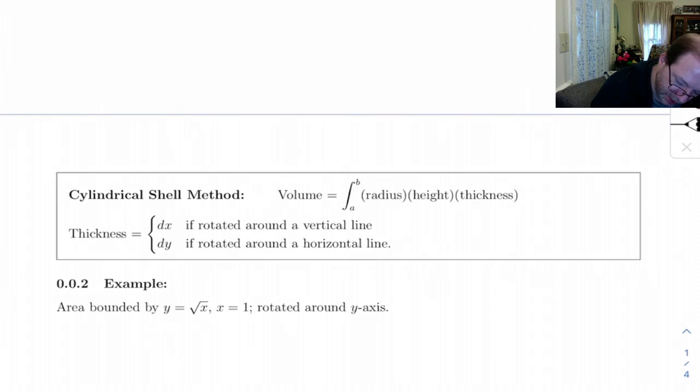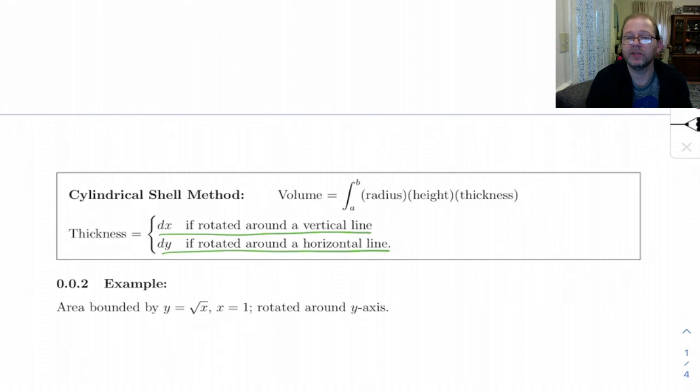So thickness is dx if rotated around a vertical line, dy if rotated around a horizontal line. And that's opposite of the way it is with discs and washers.